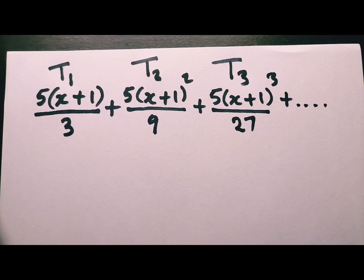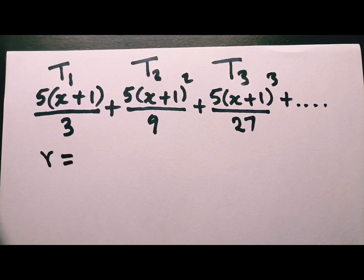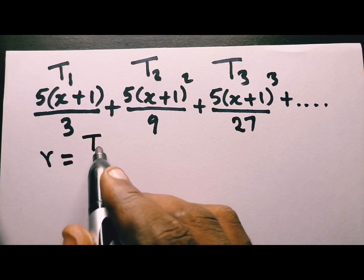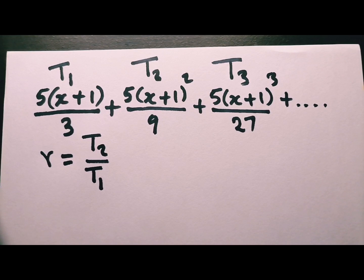For the fact that they have mentioned that this is geometric series, what do we know about geometric? We know that r is going to be T₂ over T₁.